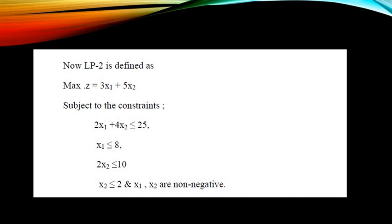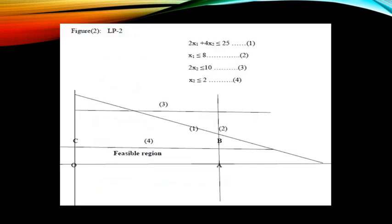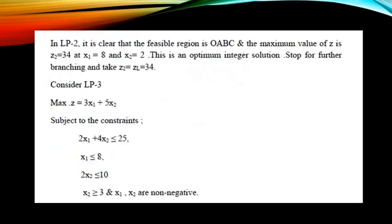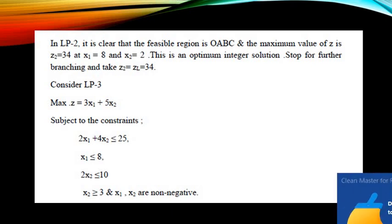LP2 is defined as: maximize Z equal to 3x1 plus 5x2, subject to 2x1 plus 4x2 ≤ 25, x1 ≤ 8, x2 ≤ 10, and the new constraint x2 ≤ 2, where x1 and x2 are non-negative integers. Solving LP2 graphically, the feasible region is bounded by extreme points O, A, B, and C. The maximum value Z2 = 34 occurs at x1 = 8 and x2 = 2. This is an optimum integer solution, so we stop further branching here and set ZL = 34.